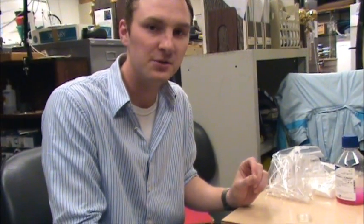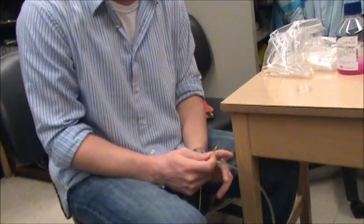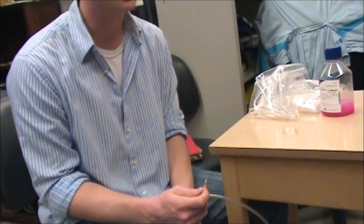Then we desheath the ganglion to take off the connective tissue that's around the ganglion so we can get access to the cell bodies. Then we add 100 microliters of collagenase dispase to the medium, put it on a shaker and let it shake for about 15 minutes. While it's shaking is a good time to prepare electrodes that we'll use to suck out the individual cells.